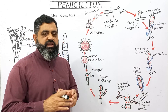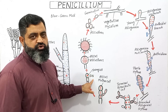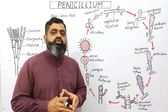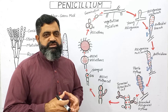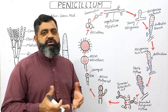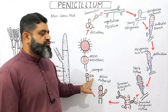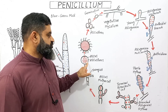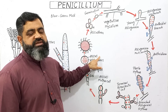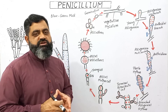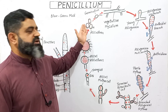Karyogamy now takes place: both n+n nuclei join together and form a 2n nucleus, known as the young zygote. This diploid stage lasts only a few minutes or hours, as it is very transient. The cell then undergoes meiosis, which is a reduction division that halves the chromosome number, producing four cells. These four cells then undergo mitosis three times, so each cell gives rise to eight spores known as ascospores, which are all haploid. These are contained within a sac-like structure called an ascus. When ascospores mature, the ascus bursts and releases them into the atmosphere.